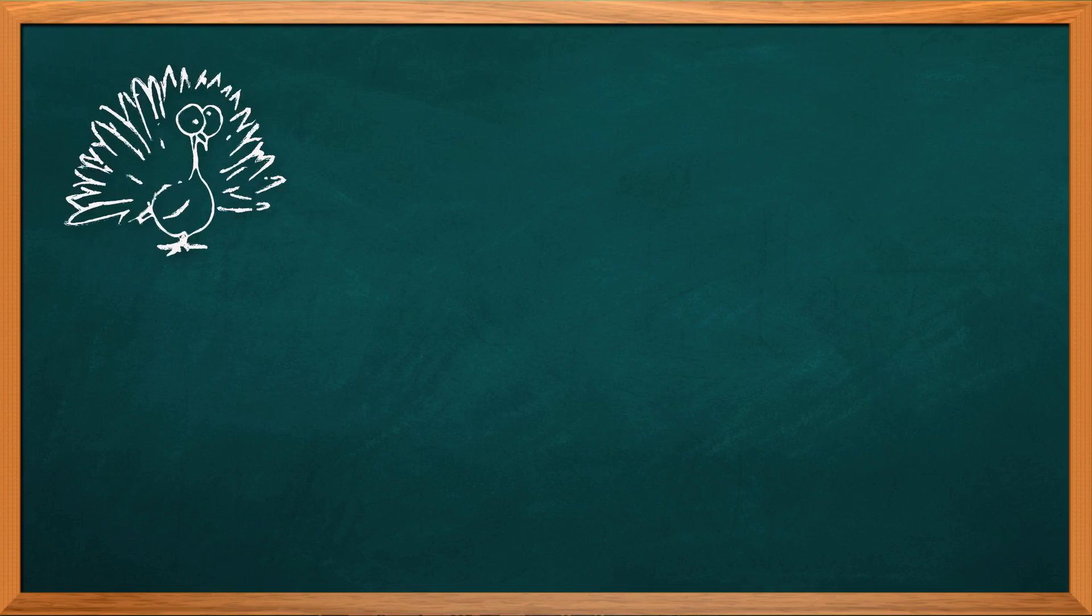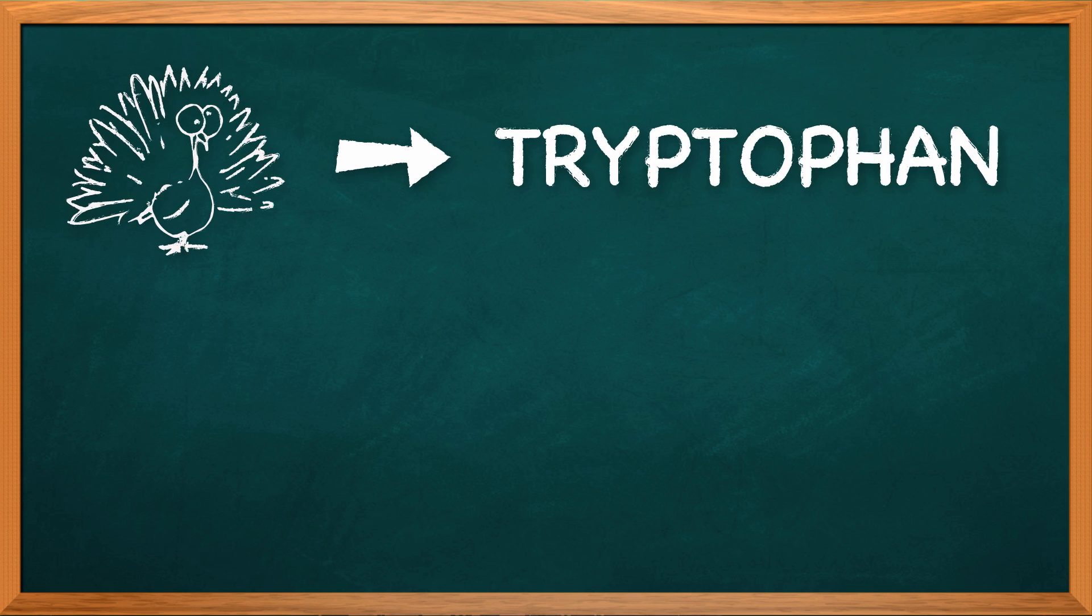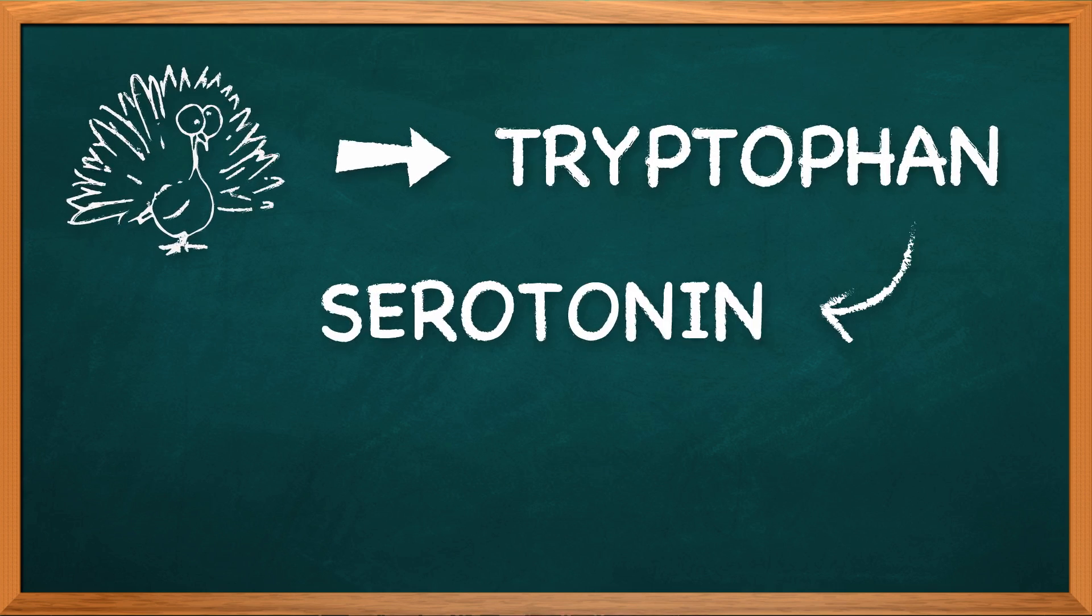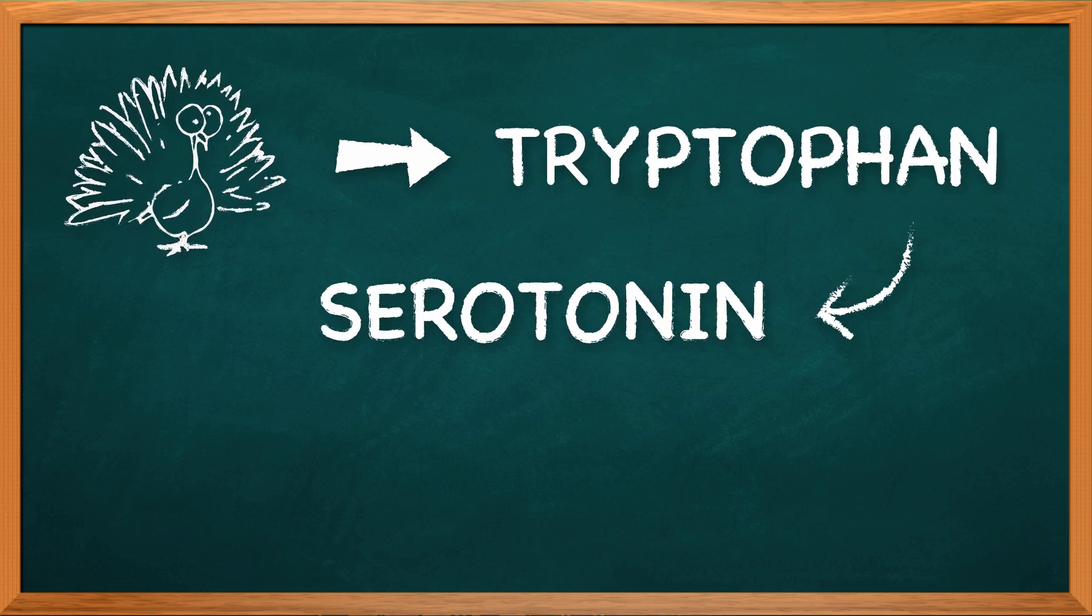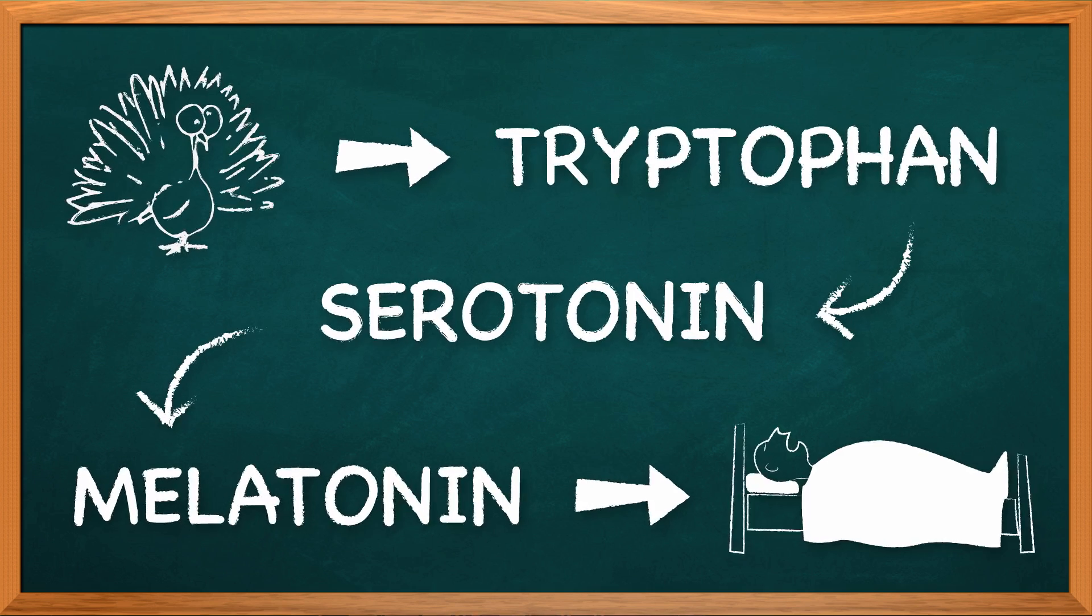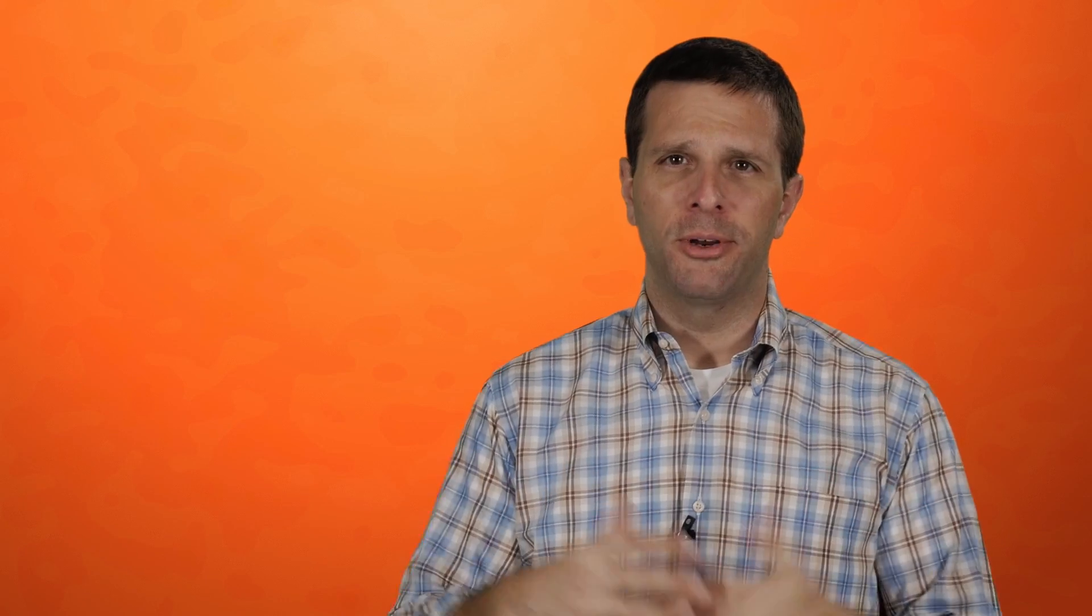And then there's the Thanksgiving Day myth. It says that turkey contains tryptophan. And tryptophan, which is an amino acid that's actually a precursor to serotonin, which is a neurotransmitter that, among other things, is a precursor to melatonin, which is a hormone that helps us sleep, is responsible for food comas. So when we eat a bunch of turkey, we get a bunch of tryptophan, and we should feel drowsy. Makes a lot of sense,